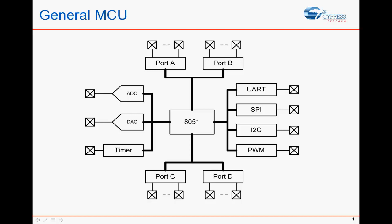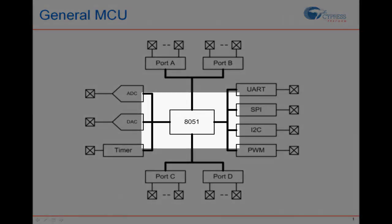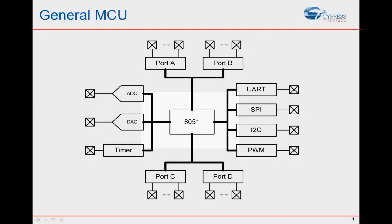This is a pretty generic view of a classical microcontroller. A typical MCU has a CPU — an 8051 in this example — that is the central link to everything. The peripherals, such as the ADC, UART, I2C, and the general IO, all connect to the CPU. They do not connect to each other. Data passes through the CPU from the peripherals or IO. Events are processed or managed by the CPU through, for example, interrupts or polling. The central processor pretty much does everything.